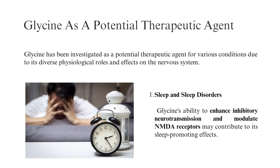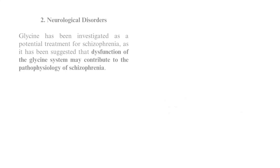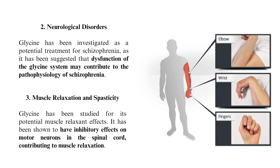Glycine as a Potential Therapeutic Agent: Glycine has been investigated as a potential therapeutic agent for various conditions due to its diverse physiological roles. Regarding sleep and sleep disorders, glycine's ability to enhance inhibitory neurotransmission and modulate NMDA receptors may contribute to its sleep-promoting effects. For neurological disorders, glycine has been investigated as a potential treatment for schizophrenia, as dysfunction of the glycine system may contribute to schizophrenia's pathophysiology. Glycine has also been studied for potential muscle relaxant effects, shown to have inhibitory effects on motor neurons in the spinal cord.